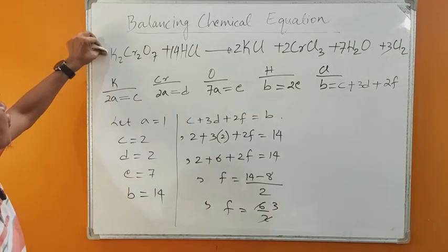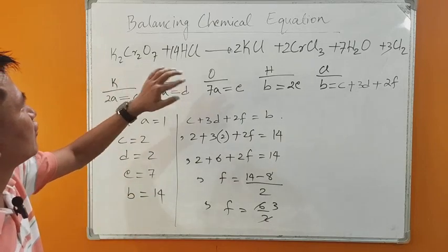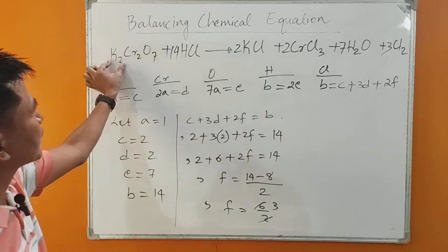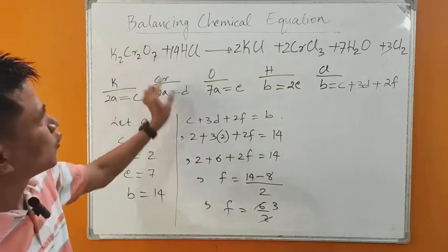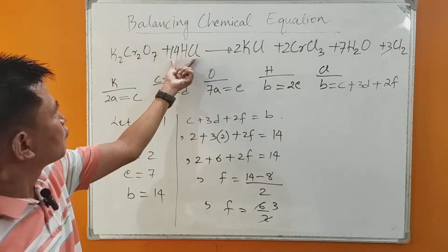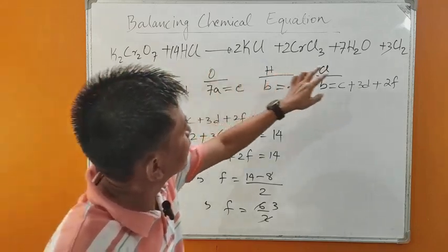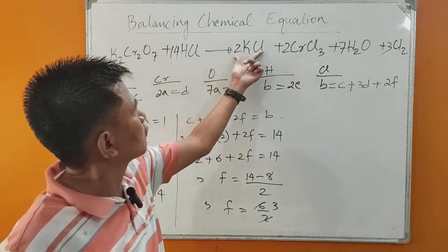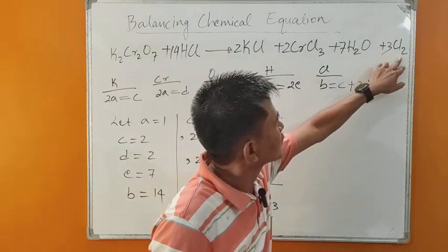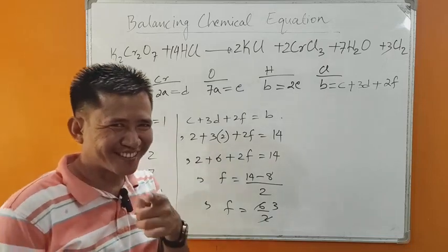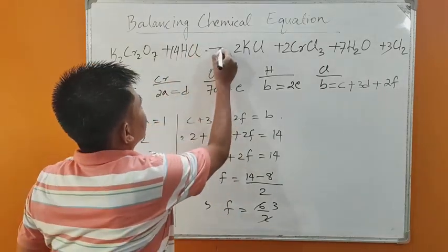Let's check whether it is balanced. Potassium: K2 gives 2 potassium on the left; 2 potassium on the right. Chromium: 2 on the left, 2 on the right. Oxygen: 7 on the left, 7 on the right. Hydrogen: 14 on the left; 7 times 2 gives 14 on the right. Chlorine: 14 on the left; 2 plus 6 plus 6 is 14 on the right. Everything is balanced! This equation is now balanced.